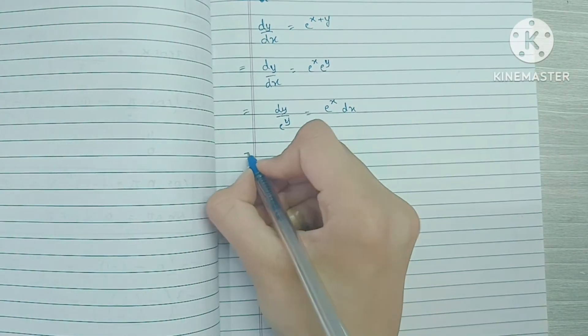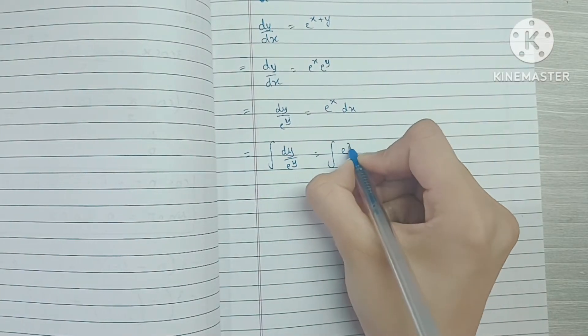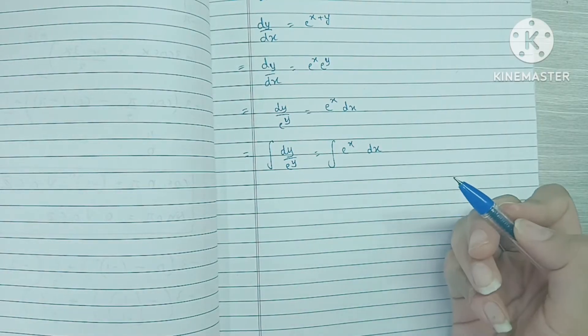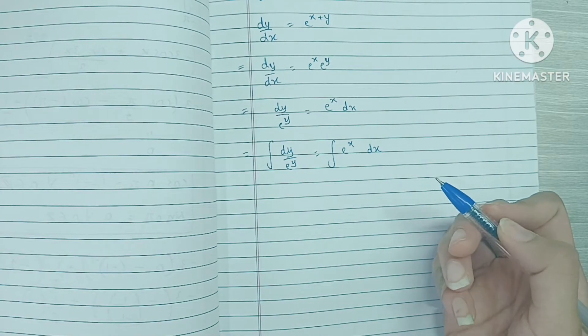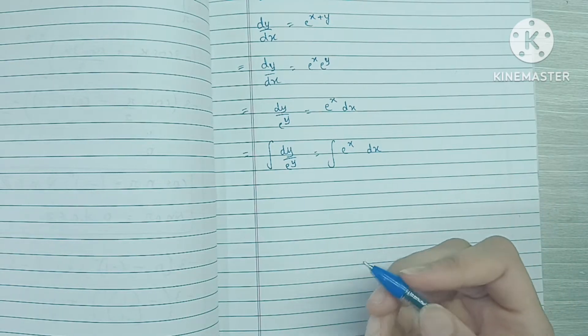Now we're going to integrate on both sides. Now we know that the differentiation of e raised to x is e raised to x, which implies that the integration of e raised to x is also just e raised to x.